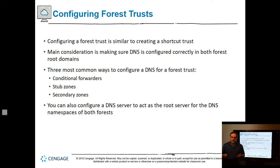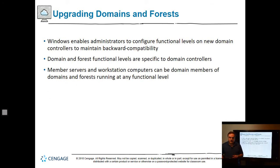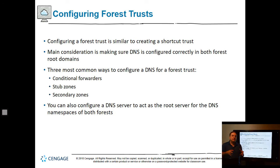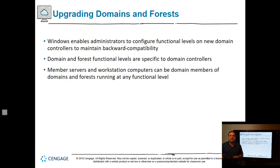Configuring a forest trust is very similar to creating a shortcut trust. The main consideration is making sure DNS is configured correctly in both forest root domains. There are three most common ways: conditional forwarders — if you're looking for this domain, go to that DNS server; stub zones — I don't have your information here, but that server over there has it; and secondary zones — a read-only copy of the entire zone, which is probably the fastest way to get resolution.